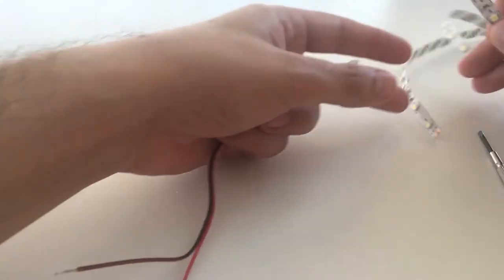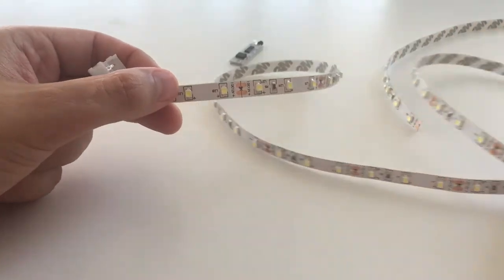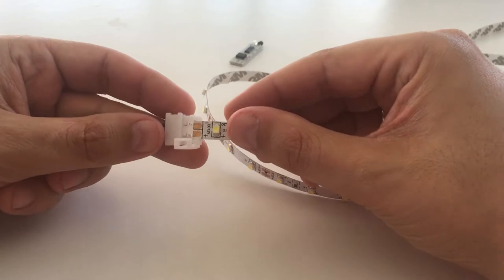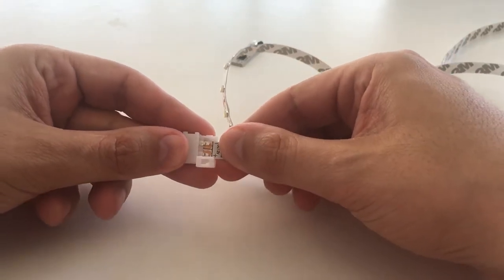So let's start with the connections. First we need to connect the LED strip to the connector. These connectors are very handy and make the connection a very simple process.